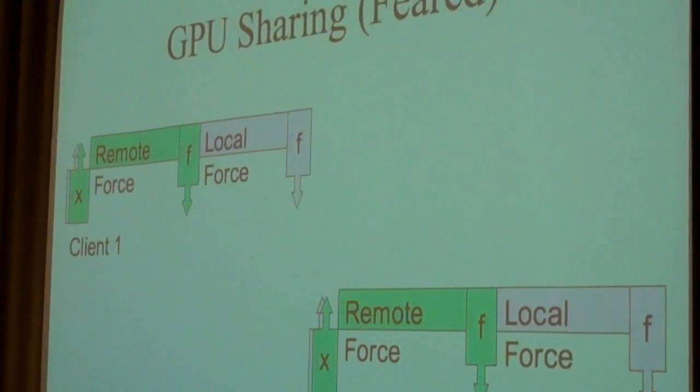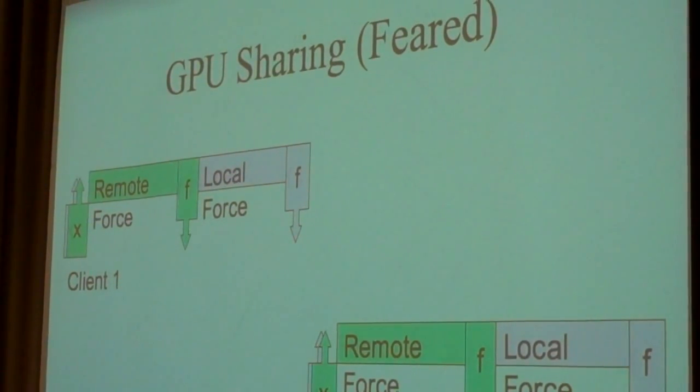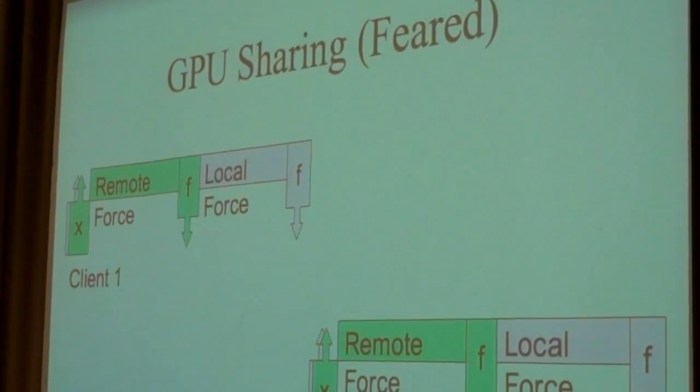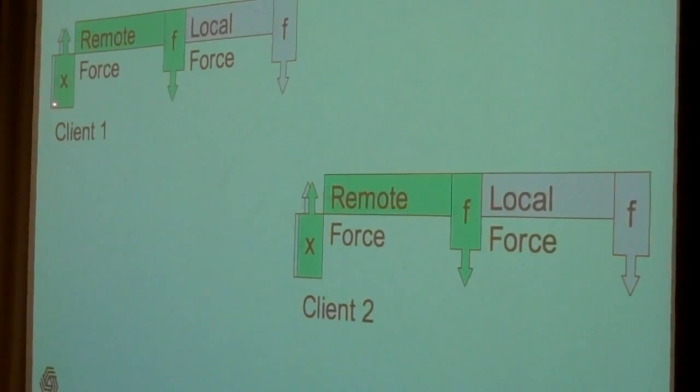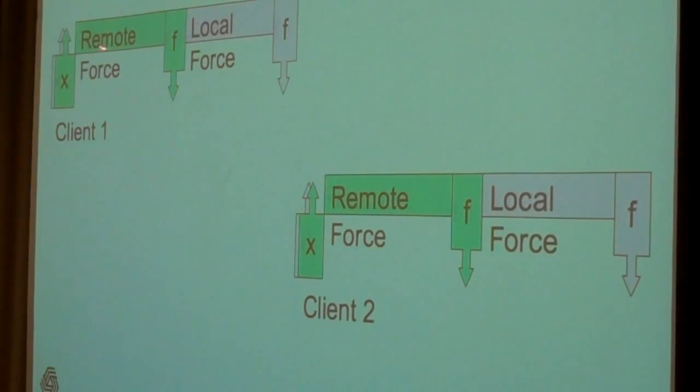This is what I was afraid would happen. Client one would submit four different commands, transmit positions to the remote forces, send those back. Whoever got in the queue first, got out of the queue first on the GPU, and client two would be delayed. We would have these local forces coming ahead of these remote forces.